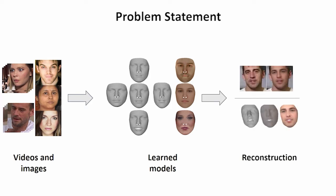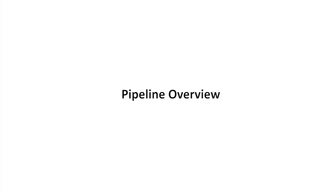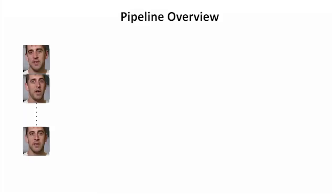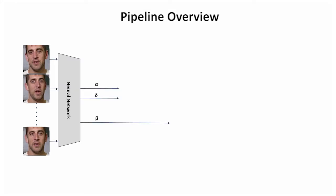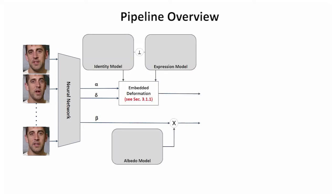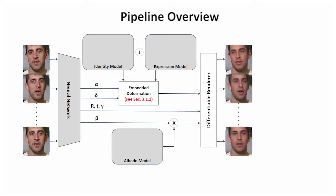Our approach also allows for in-the-wild monocular reconstruction at test time. Given images from the same identity, a Siamese neural network is used to extract coefficients for our learnable models. The models are jointly learned in addition to the network weights. The neural network also predicts the rigid head pose and scene illumination for each input image. The computed 3D meshes are then rendered using a differentiable renderer.